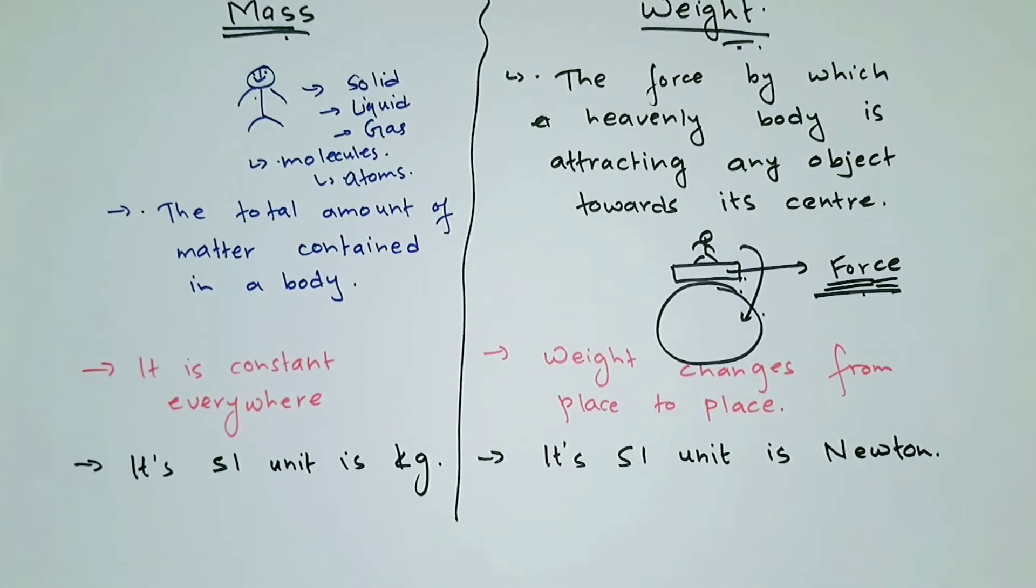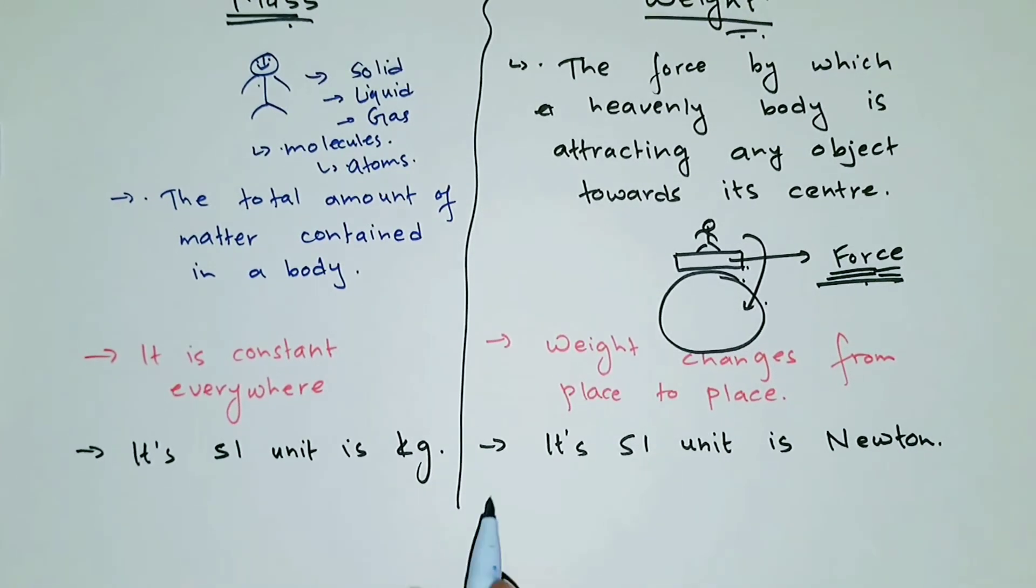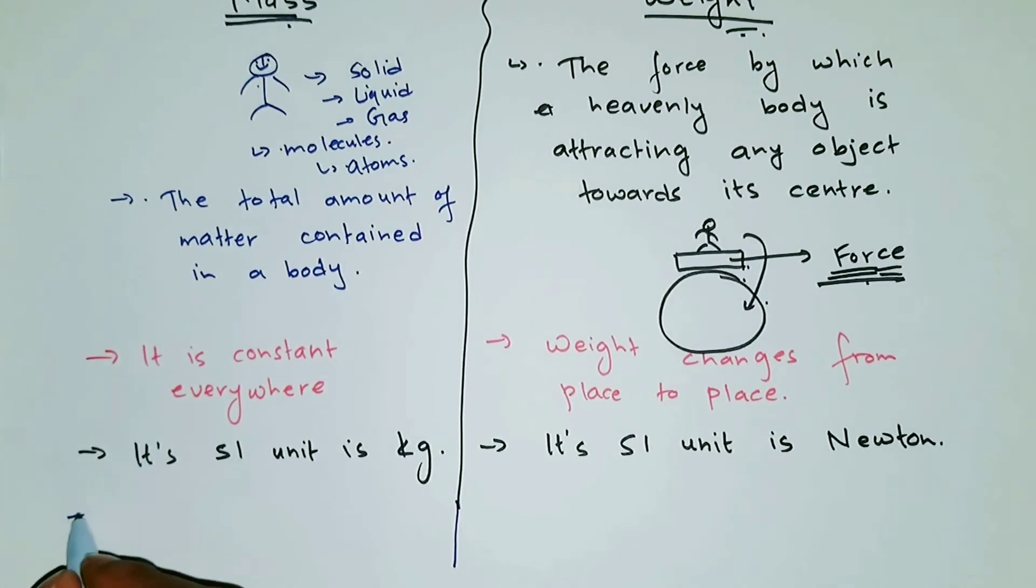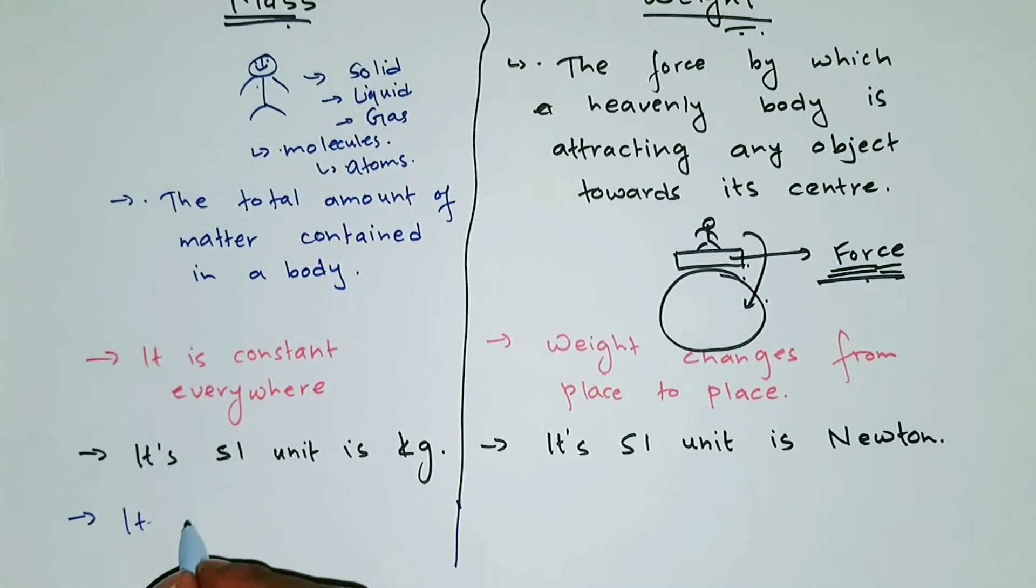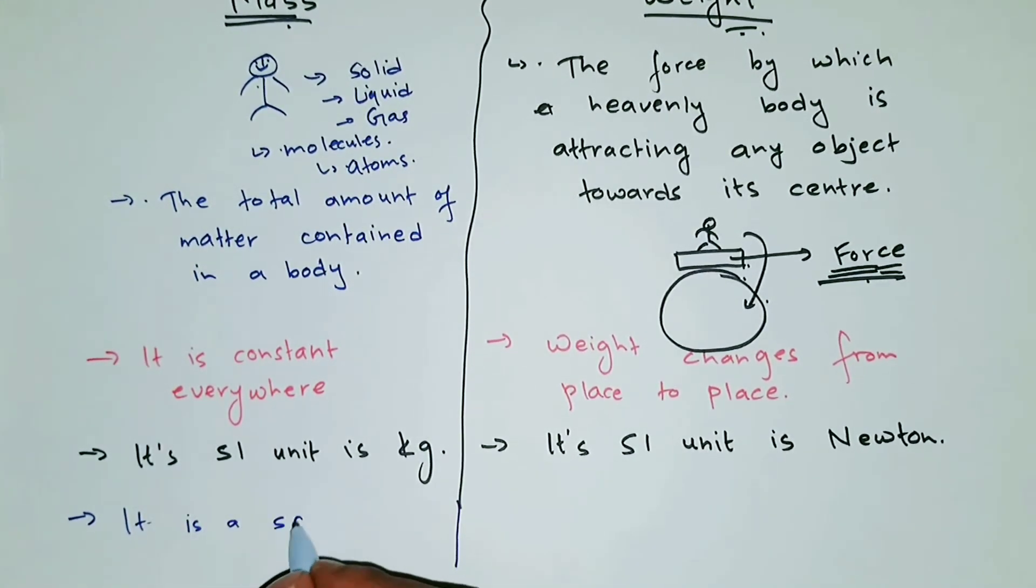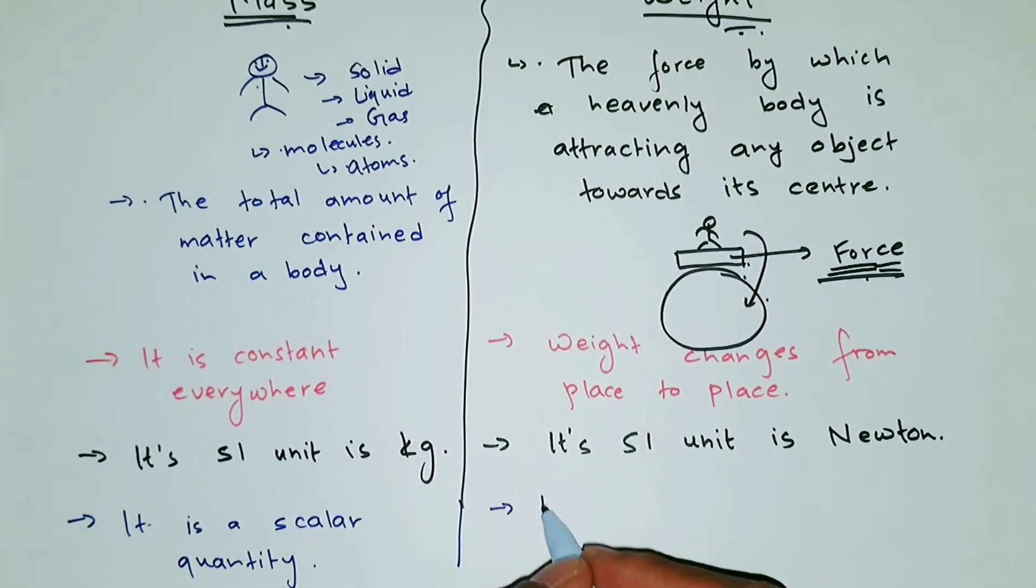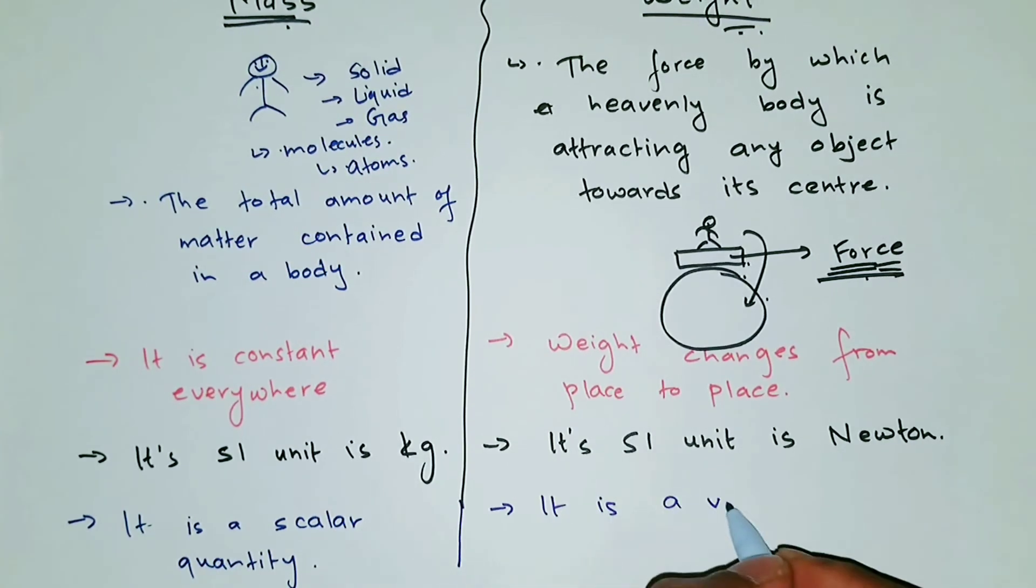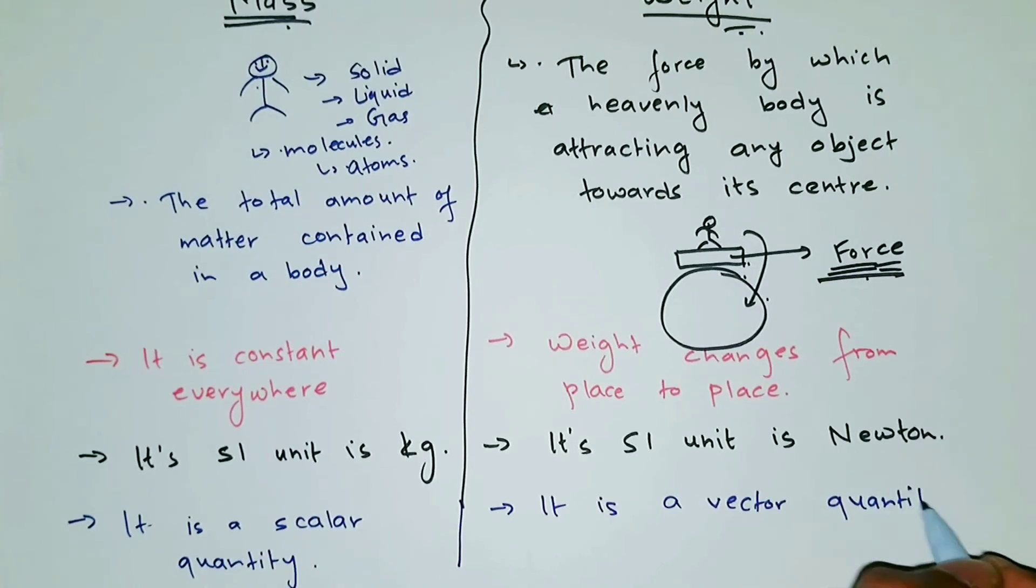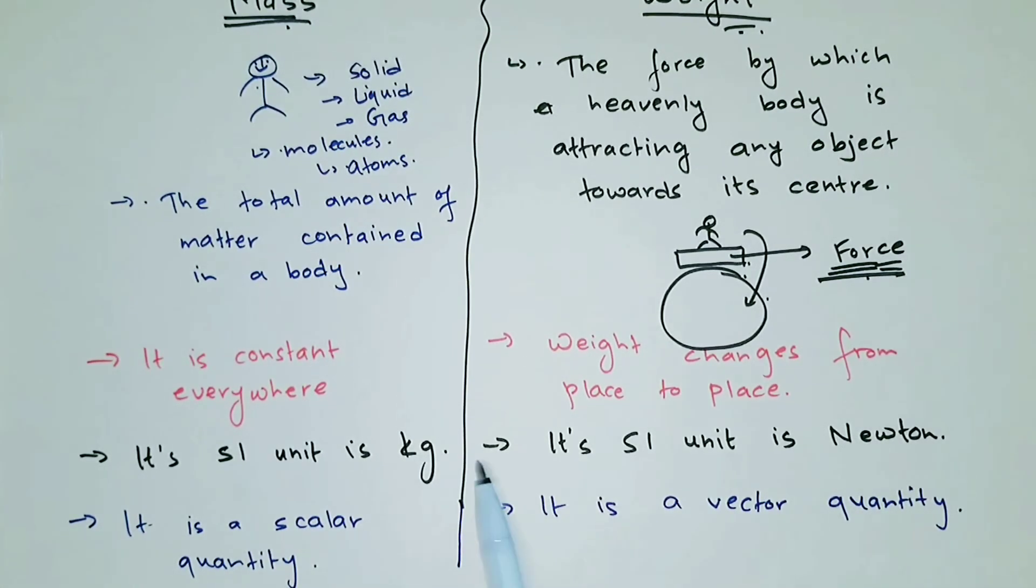And for most of the questions that will be asked in your examination, I think three differences will be enough. But if you want to add another one, you could write like mass is a scalar quantity, whereas weight is a vector quantity. And now we have the differences between mass and weight. Thank you.